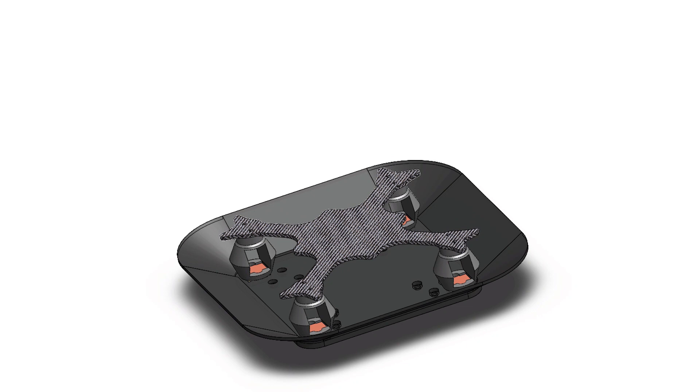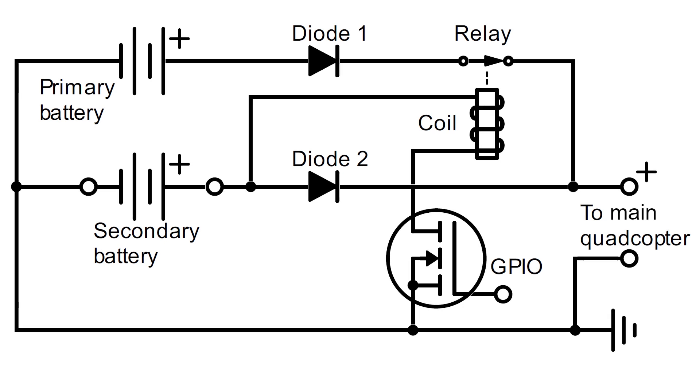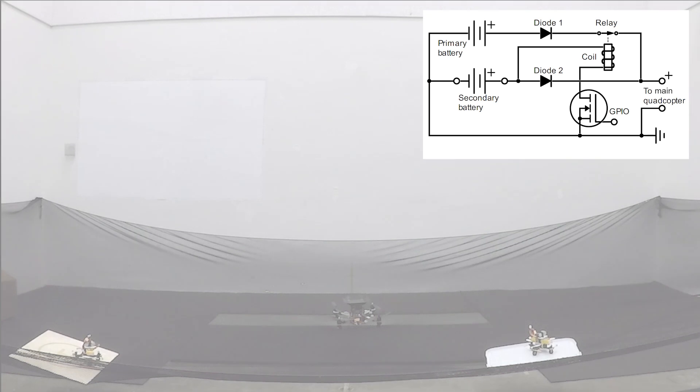Spring-loaded contacts and copper plates are embedded in the platform and the legs respectively to establish electrical contact on docking. This is a schematic of the battery switching circuit. We shall explain its working principle in a flight experiment.